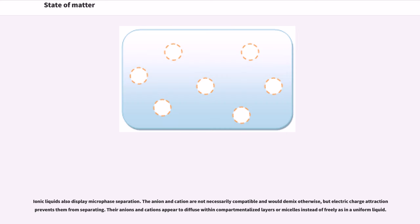Ionic liquids also display microphase separation. The anion and cation are not necessarily compatible and would demix otherwise, but electric charge attraction prevents them from separating. Their anions and cations appear to diffuse within compartmentalized layers or micelles instead of freely as in the uniform liquid.